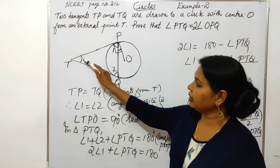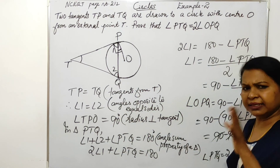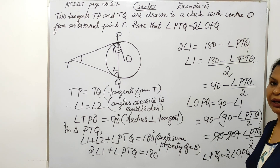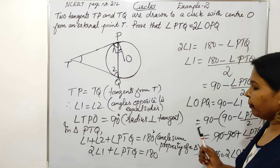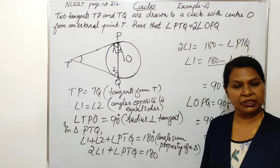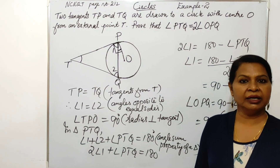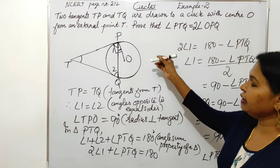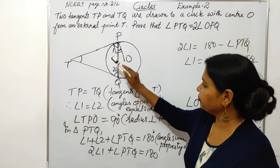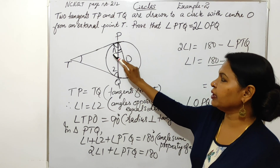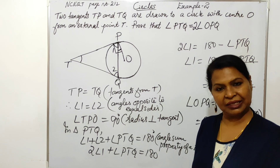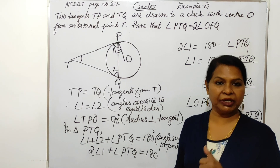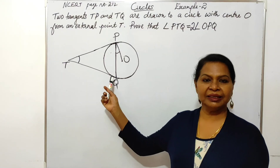If angle PTQ is 100, then OPQ will be 50, and 40 will be 80. Then, if you have to prove it, you can do it easily. You can only ask questions like this in the sample paper, and we can answer that question. If PTQ is 2 angle, this is how it is. If you have 90 degrees, you have to answer that question. This is another method — the second method.